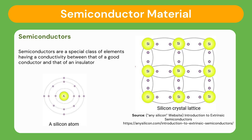Before we take a look at the fabrication process of the NMOS transistor, let's refresh and touch on the definitions of N-type and P-type semiconductors. Semiconductors are a special class of elements having a conductivity between that of a good conductor and that of an insulator. There are three semiconductors that are most frequently used in the construction of electronic devices, and they are germanium, silicon, and gallium arsenide.